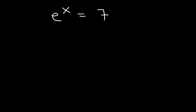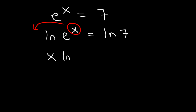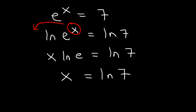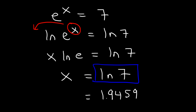What about this one: e raised to the x is equal to 7? Whenever you're dealing with base e, it's better to use the natural log. Taking the natural log of both sides and moving x to the front gives x times ln e equals ln 7. Since ln e is 1, x equals ln 7. That's the exact answer. The decimal value is approximately 1.9459.